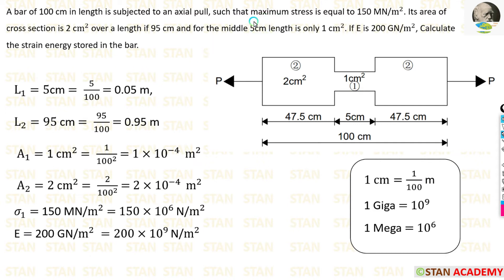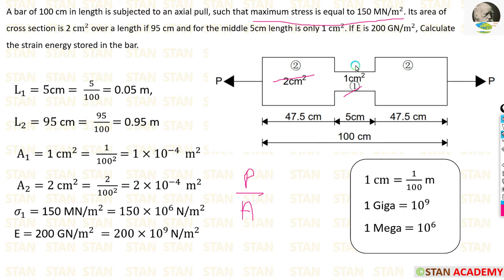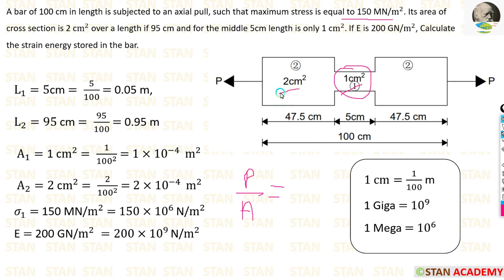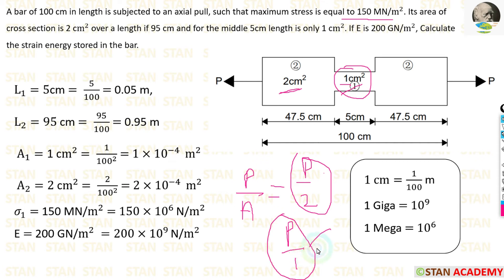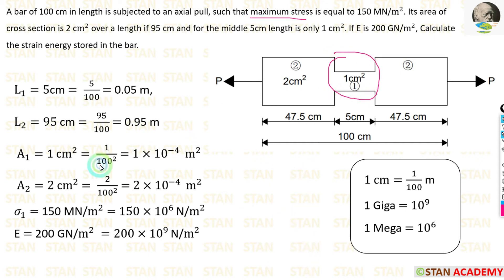The maximum stress is given as 150 mega newton per meter square, but we need to determine which section it applies to. Stress equals load by area, P by A, so stress is higher where the area is smaller. The center portion has the smallest area, so the maximum stress applies there. For the second section with area 2 centimeter square, stress is P by 2; for the first section with area 1 centimeter square, stress is P by 1 — which is higher. So maximum stress occurs in the middle portion, and we keep it as sigma1.